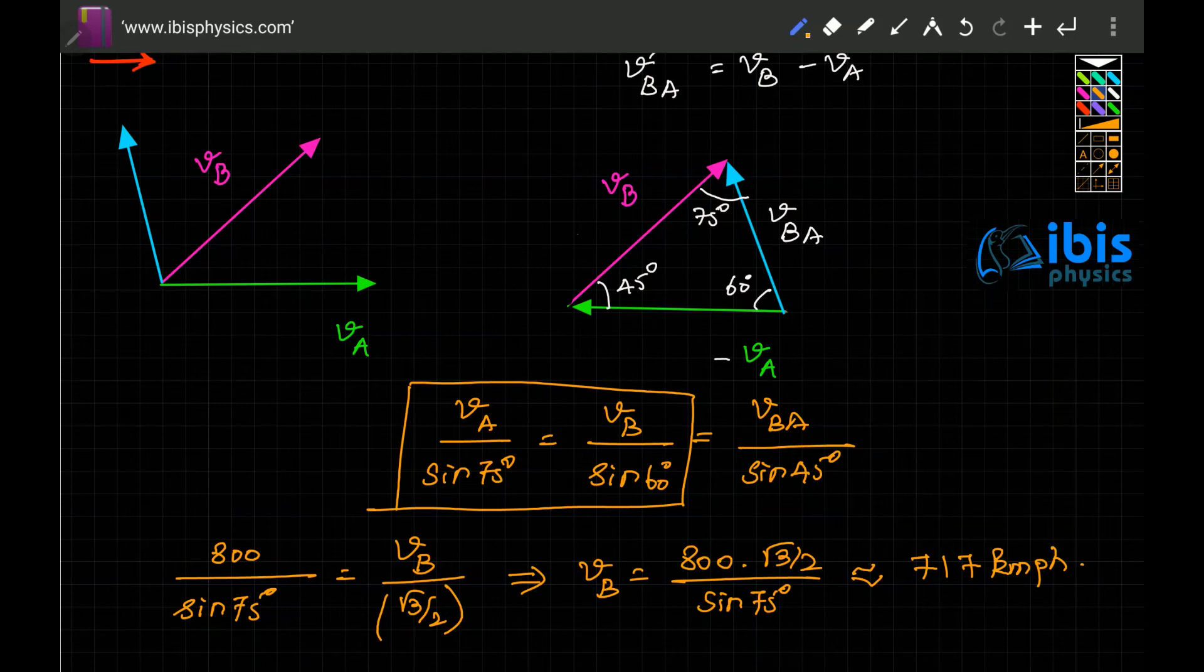You obviously know that because this is 800 and VA is going this way, VB is going this way. If its velocity were more than this, it would appear to be going either this way or that way. Because it is receding at 60 degrees, you know its velocity is actually less than that of this.